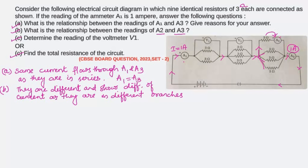So A1 equals A3, which is 1 ampere, and the values of current in A2 and A3 are different because they are in different branches. For the third part — the reading of voltmeter V1 — when 1 ampere flows and reaches point X, the current divides but the total current in the branch is still 1 ampere. Using Ohm's law, we need the resistance first.